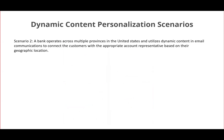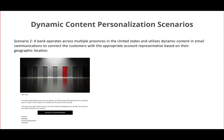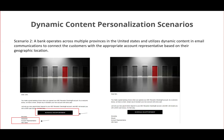The second scenario is a bank operating across multiple provinces in the United States that utilizes Dynamic Content in email communication to connect customers with the appropriate account representative based on their geographic location. You can see they are leveraging Dynamic Content criteria in the CTA and in dynamic signatures. The name and account representative in the signature specifically belong to that geographic location, effectively connecting customers with the right representative and making them feel valued.